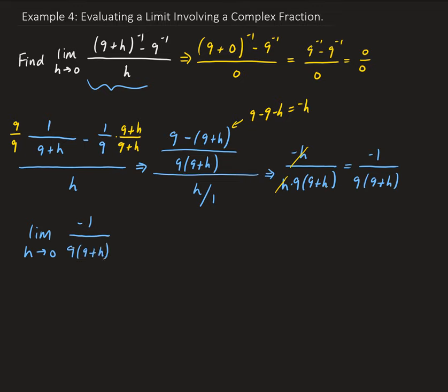So just rewriting this algebraically allowed us to cancel out the h's, which were giving us the zero over zero value. From here, we just go ahead and do a direct substitution: letting h be zero, we get minus one divided by nine times nine plus zero, and that leaves us with minus one over 81. So that is our solution.